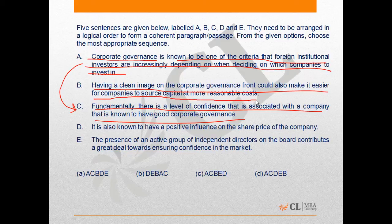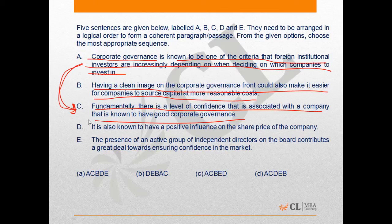Option B is talking of another advantage of corporate governance, which is related to sourcing investment for a company. In option C we are told how corporate governance is important, so A, then C, then we can come to B. Option D says it is also known to have a positive influence on the share price of the company, so D talks of further advantages of corporate governance.